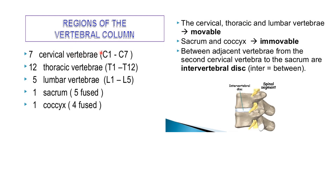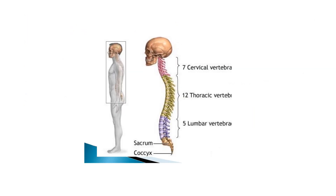There are 7 bones in the cervical region (neck), 12 thoracic vertebrae (T1–T12), and 5 lumbar vertebrae (L1–L5). The five sacral bones fuse to form one sacrum and the four coccyx bones fuse to form one coccyx. Cervical, thoracic, and lumbar vertebrae are movable while sacrum and coccyx are immovable. Between the second cervical vertebra and the sacrum there are intervertebral discs between adjacent vertebrae.